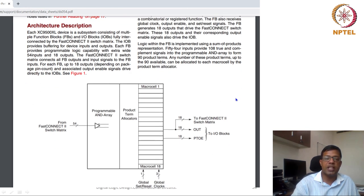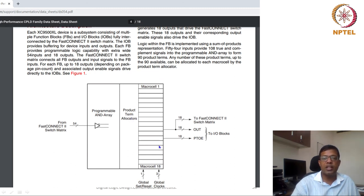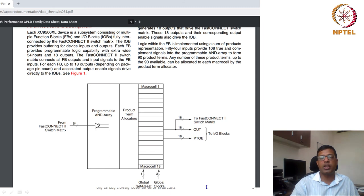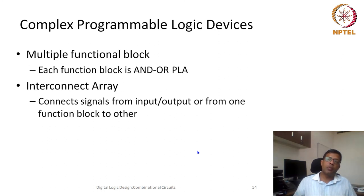Looking at the 18 macro cells: you have 54 inputs — which is 18 in original and 18 in complemented form — going into AND and OR cells. These are the product terms, and after that the OR cells generate different outputs. There are 18 outputs possible. The CPLD allows even more programmability than a simple PLA.